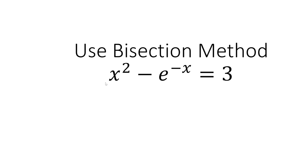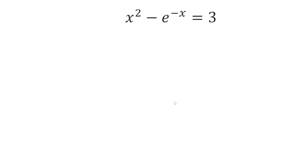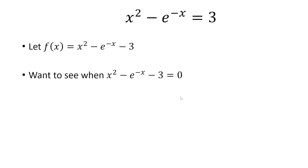In this video, we want to use a bisection method to solve the equation x squared minus e to the negative x equals 3. So let's first define f of x to be the function x squared minus e to the negative x minus 3, and we're going to set this equal to 0, because solving for 0 is the same thing as solving this equation above.